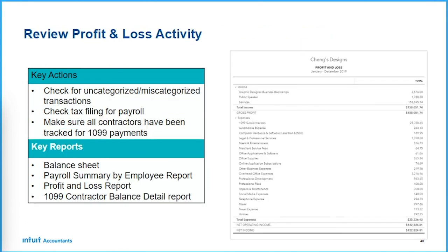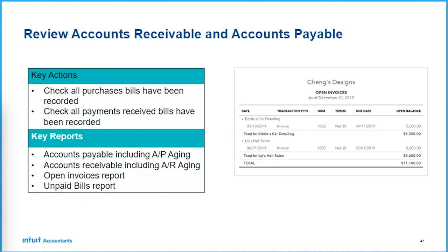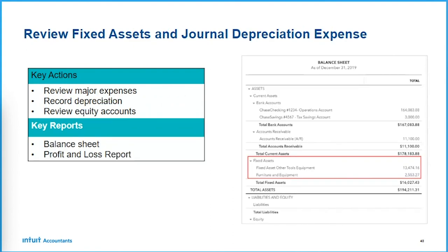Same idea for reviewing your profit and loss — create a bundle of reports. In this bundle you'd have your balance sheet, payroll summary by employee, P&L, and 1099 Contractor Balance Detail Report. For AP and AR: accounts payable including AP aging, accounts receivable including AR aging, open invoice reports, and unpaid bills reports — all available in the Accountant's Edition. If you have Essentials or a lower edition of QuickBooks Online for your client, some reports may not be available, which is when you'd want to consider upgrading to QuickBooks Online Plus.